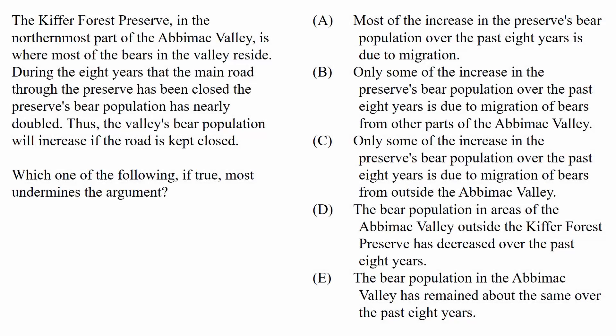This question asks us which one of the following, if true, most undermines the argument. So we're looking at a weakening question. The answer will hurt the argument if we assume the answer to be true. The four wrong choices will either strengthen the argument or do nothing at all to the argument if we assume them to be true.